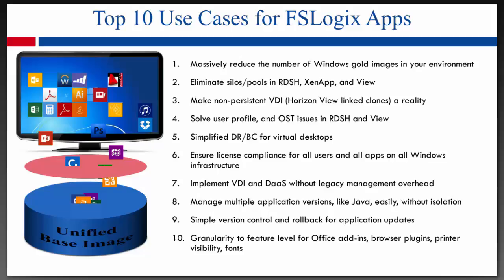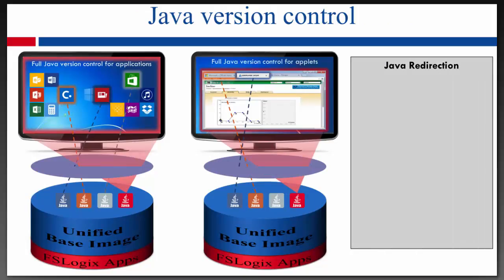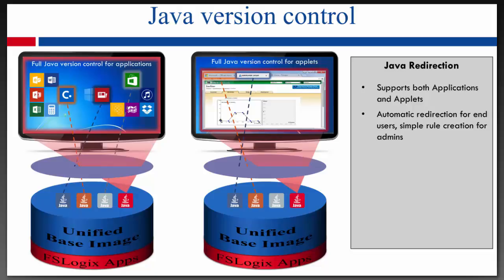Java version control is a big use case. When you have many different versions of Java, you're doing multiple silos and multiple images. With Java redirection, we can support both applications and applets. If you have certain applications or applets tied to a certain Java version, we can handle that with the FSLogix Java redirection. We can redirect based on simple rules — we pick the applet and assign a certain version of Java to it, or we say this URL needs to go to this Java version. So when you open tabs in your browser, each different tab based on the URL can have a different version of Java.